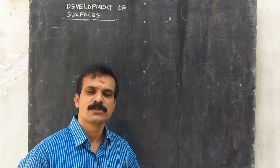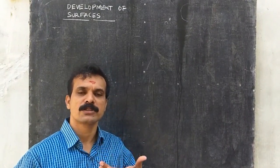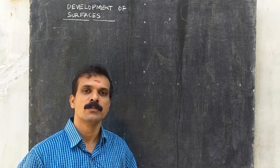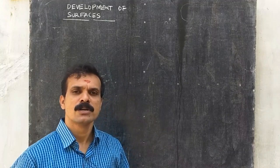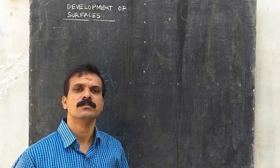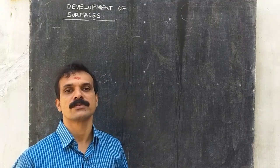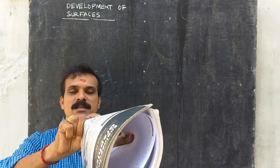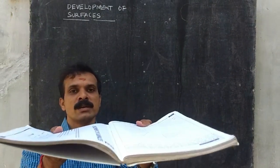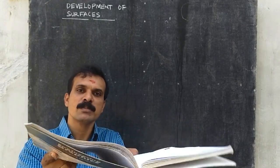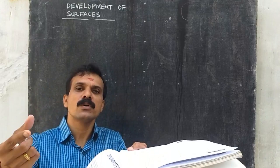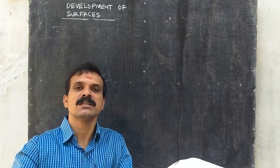Hello friends, after completing the section of solids, we are now moving to a new portion called development of surfaces. What do you understand by the term development of a surface? Consider this as a cylinder. Its development is simply the unfolding of a three-dimensional object into a two-dimensional plane.